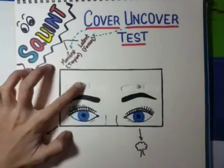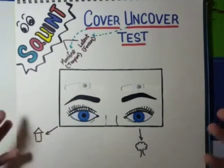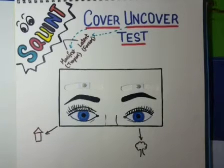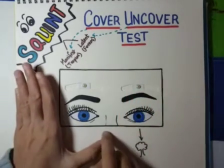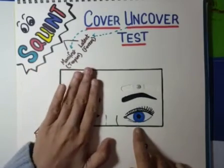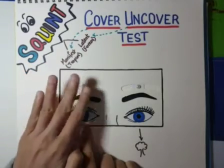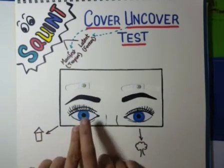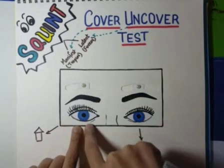Now let's say the patient has latent squint in the right eye. When the patient comes to us, we don't know if he has a squint or not. We perform the cover-uncover test on both eyes. On the first eye, cover and uncover — nothing happened. On the other eye, cover and then uncover — when we uncovered it, the eye was deviated and it moved. This is a positive uncover test in the right eye, which means the right eye has a latent squint — exophoria of the right eye.